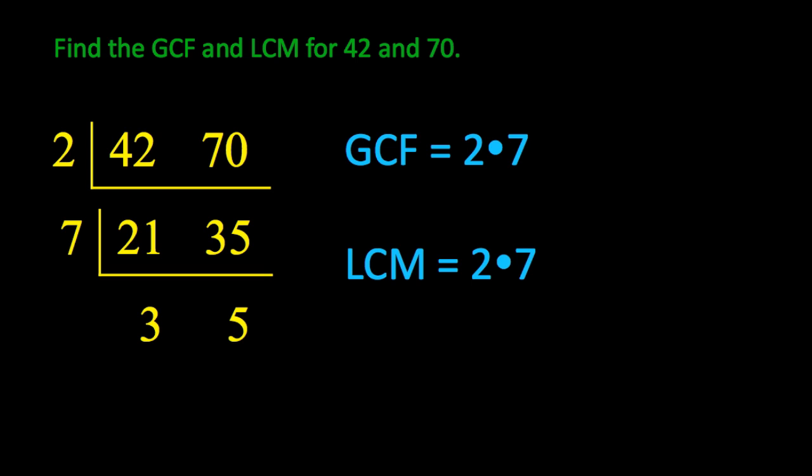And the reason we would stop is that 3 and 5 share no more common factors. Well, at that point, you've extracted or taken out all the factors that divide evenly into 42 and 70.